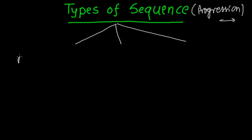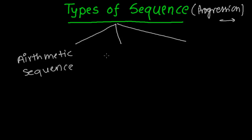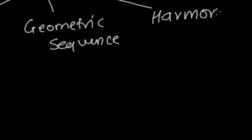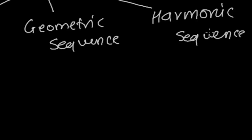The first one is Arithmetic Sequence, the second one is Geometric Sequence, and the third one is Harmonic Sequence. These three types of sequence we have to learn one by one — arithmetic, geometric, and harmonic.